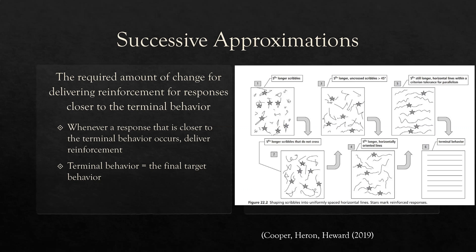Our terminal behavior is the final target behavior. Looking at this picture — step one, we're reinforcing longer scribbles. The terminal behavior is straight lines. Stars represent reinforcements. In step two, you're looking for longer scribbles that don't cross, so we're closer to lines. Step three, even longer uncrossed scribbles that are more straight than before. Step four, longer, now horizontally oriented lines. Step five, longer horizontal lines within our criterion tolerance. You can see as we get closer to our terminal behavior, we keep reinforcing, finally getting to step six. Again, simple intervention — but it requires precision, accuracy, and really good observation.